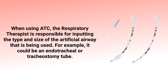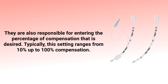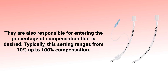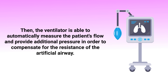When using automatic tube compensation, the respiratory therapist is responsible for inputting the type and size of the artificial airway being used — for example, an endotracheal or a tracheostomy tube. They are also responsible for entering the percentage of compensation desired, which typically ranges from 10 up to 100%. The ventilator is then able to automatically measure the patient's flow and provide additional pressure to compensate for the resistance of the artificial airway.